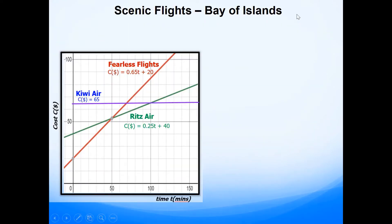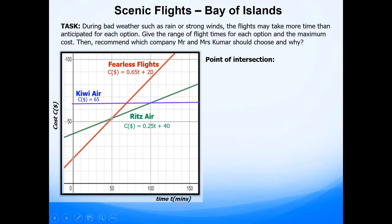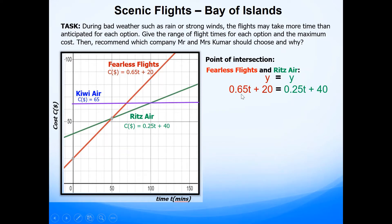This task requires you to find the range of flight times for each option available. From the previous video we have already worked out the equations for each of the three companies. Fearless Flights for example is given by 0.65T + 20. Looking at the graph, the red line for Fearless Flights intersects with the green line for Ritz Air, and we can look at the point of intersection for these two lines. So first we'll find the point of intersection between Fearless Flights and Ritz Air by solving simultaneously — y = y, so 0.65T + 20 equals